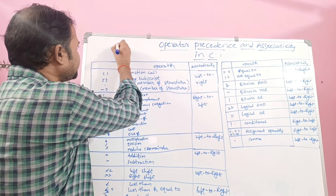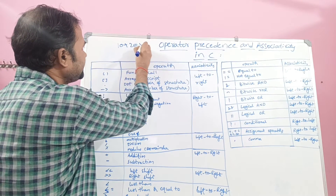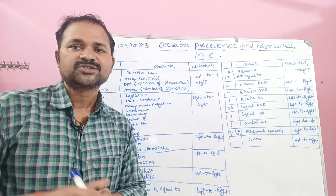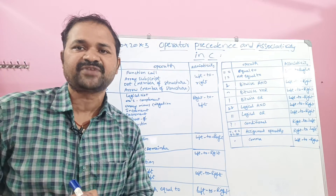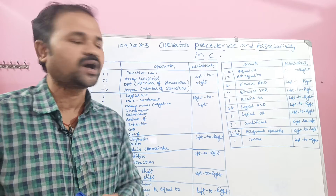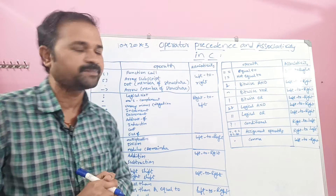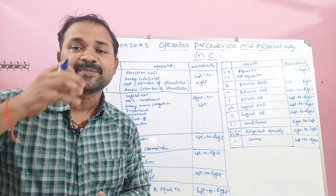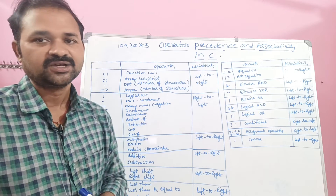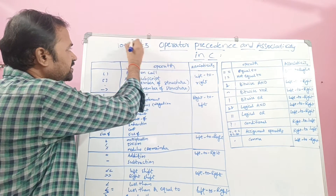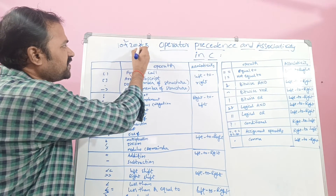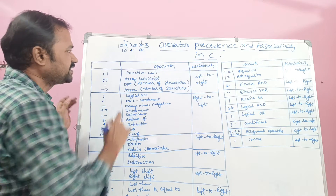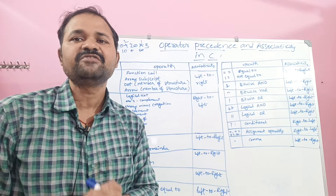Consider the expression 10 plus 20 into 3. This expression contains two operators: plus and star. Which operator should be executed first? In C or any programming language, the star operator has higher precedence than the plus operator. So first the star operator will be executed: 20 into 3 is 60. Then plus will be executed: 10 plus 60 gives 70 as the result.